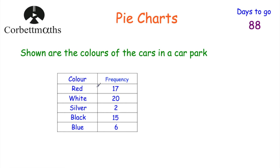To work out the angles, first add up the frequencies. The question doesn't tell us how many cars there were, so we do: 17 plus 20 plus 2 plus 15 plus 6, which equals 60. So there are 60 cars in the car park.